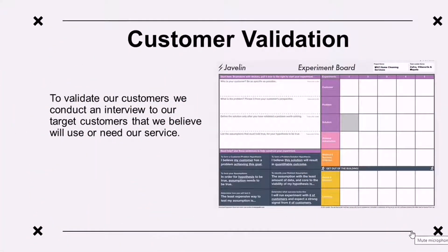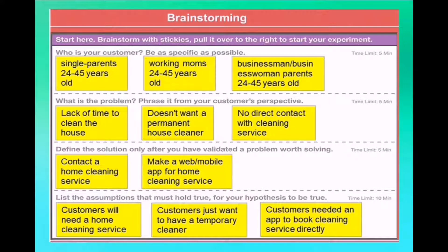This is the customer validation section. Customer validation is used to validate our customers, and we also conducted interviews with our target customers who we believe will need our services. This is the first part of our Javelin Board, which is the brainstorming area, where we gather insights from the interviews we conducted.